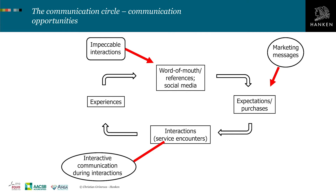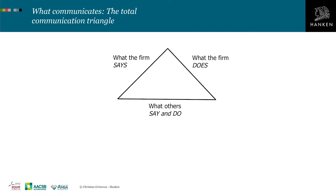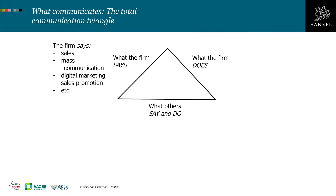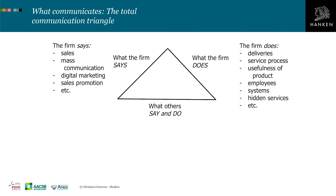From the firm's point of view, it's important to understand that so much communicates. First, what the firm says will communicate — there we have traditional marketing communication media including sales, and digital marketing as something that's emerged during recent times. Then what the firm does communicates equally much, for example deliveries, the service process with all its encounters, usefulness of products bought, employee behavior, and how systems function.